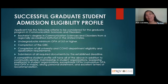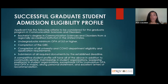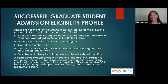To be successful, you must have a bachelor's degree in Communication Sciences and Disorders from a regionally accredited institution in the U.S., a minimum undergraduate GPA of 3.0, completion of the GRE, completion of all university and COMD department eligibility application requirements, and submission of all required documents by the established deadline. A competitive student profile will also include community service, membership and leadership positions in student organizations, exceptional GPAs, a strong personal statement, and excellent letters of recommendation.